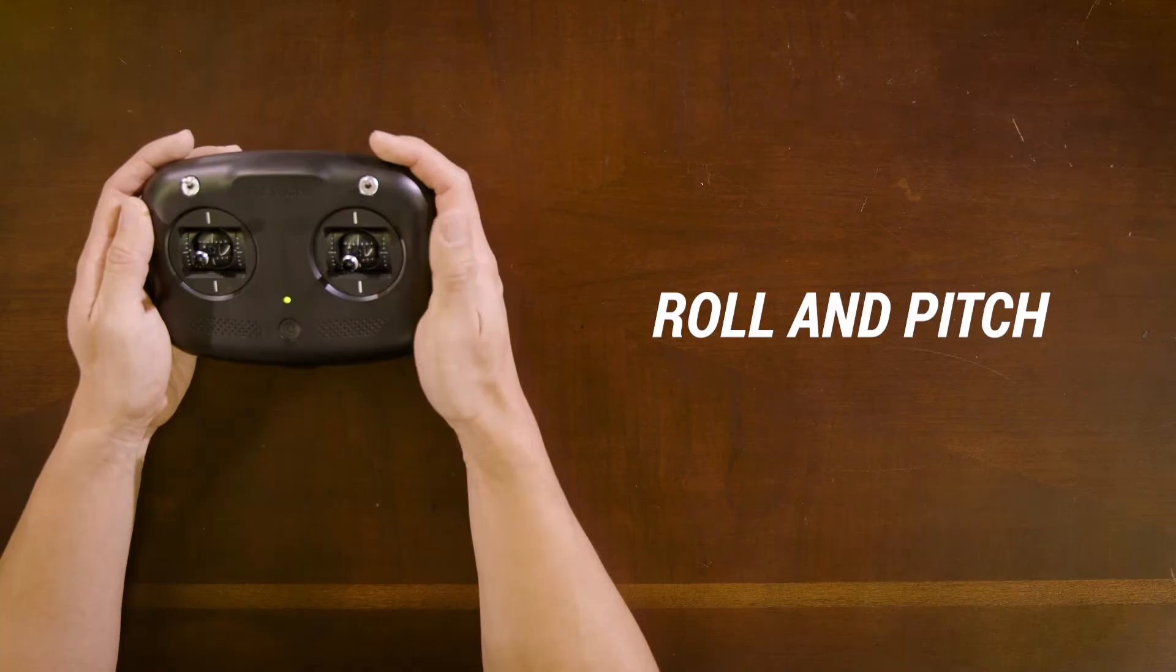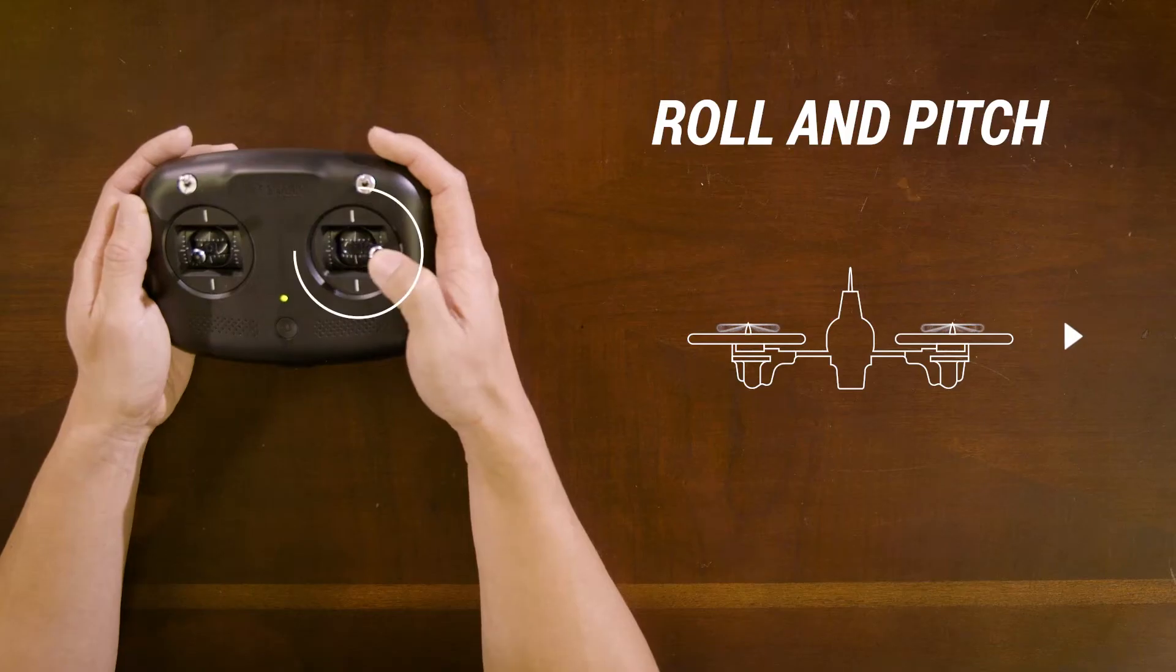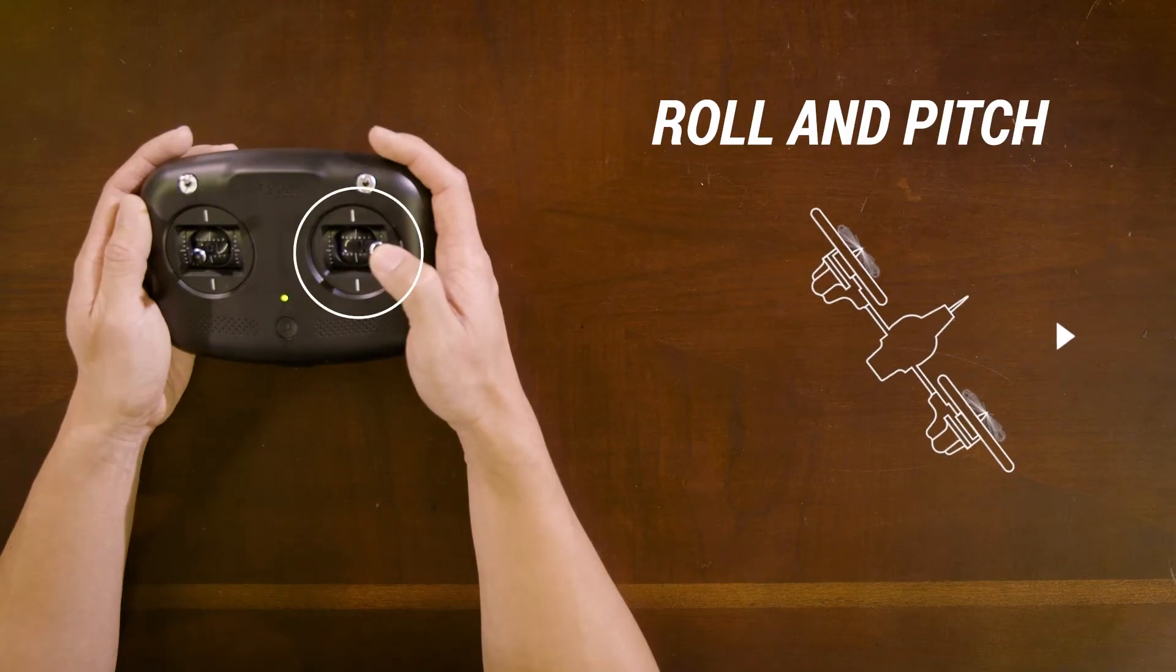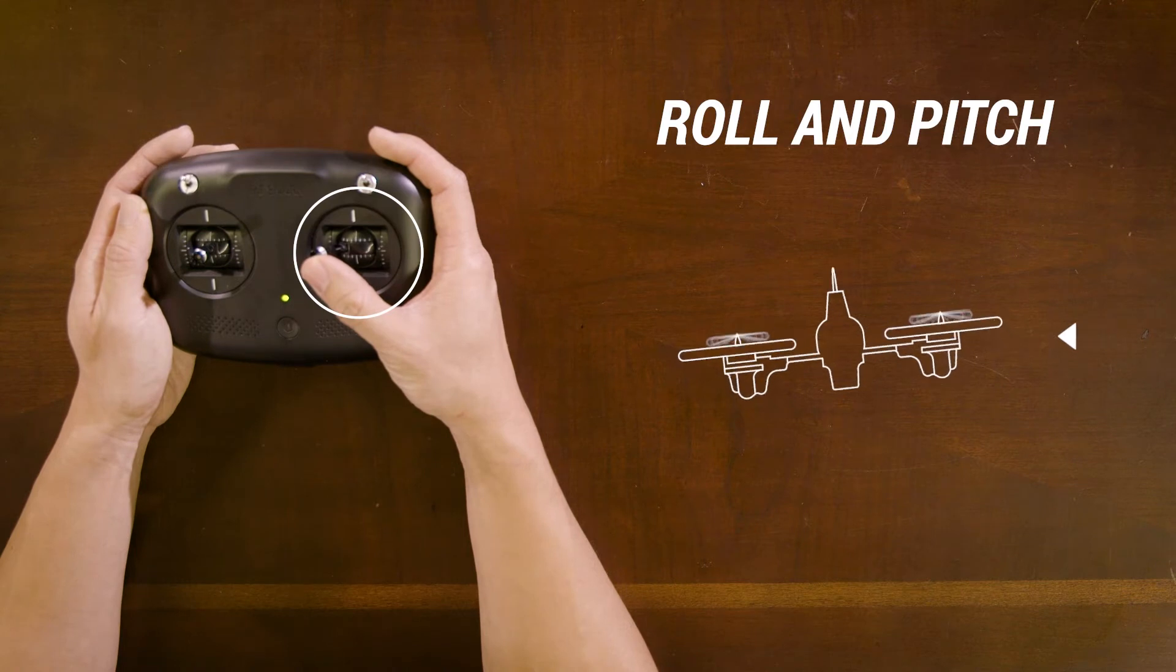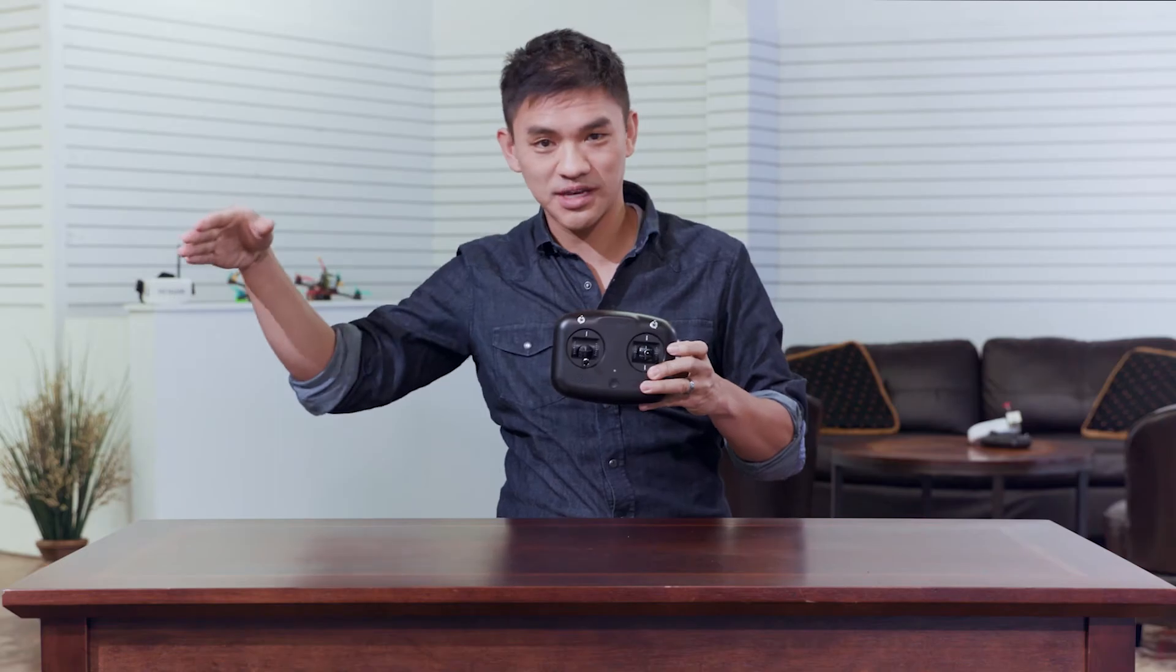The right stick controls roll and pitch. When you move the stick to the right your drone will start to drift to the right. When you move it to the left, your drone will drift to the left.